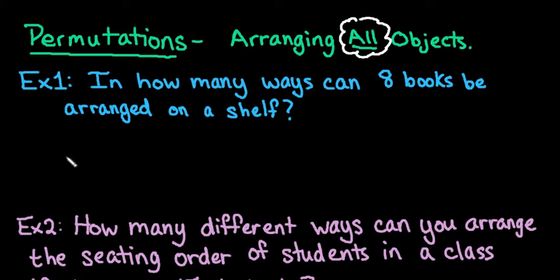For example, in how many ways can 8 books be arranged on a shelf? Remember that when you're talking about all of the objects at one time, we can use the formula n factorial. In this case, our n would be 8.